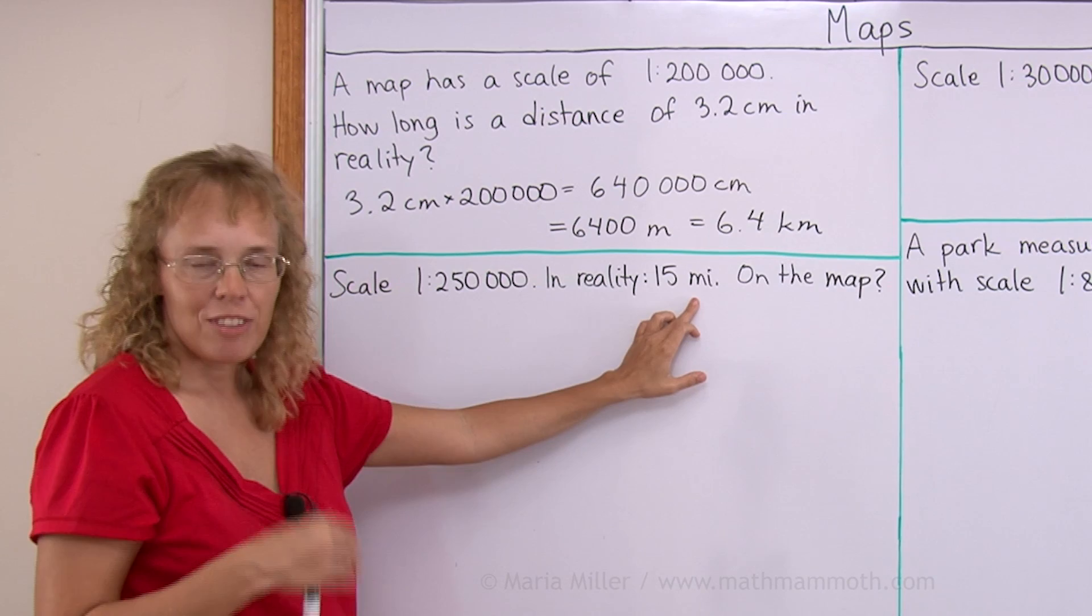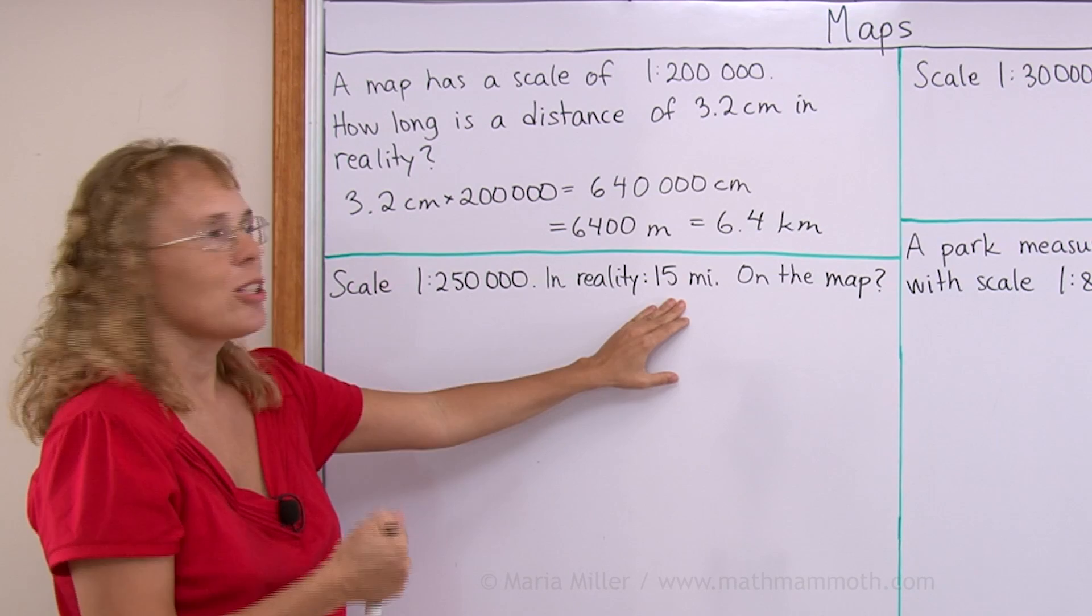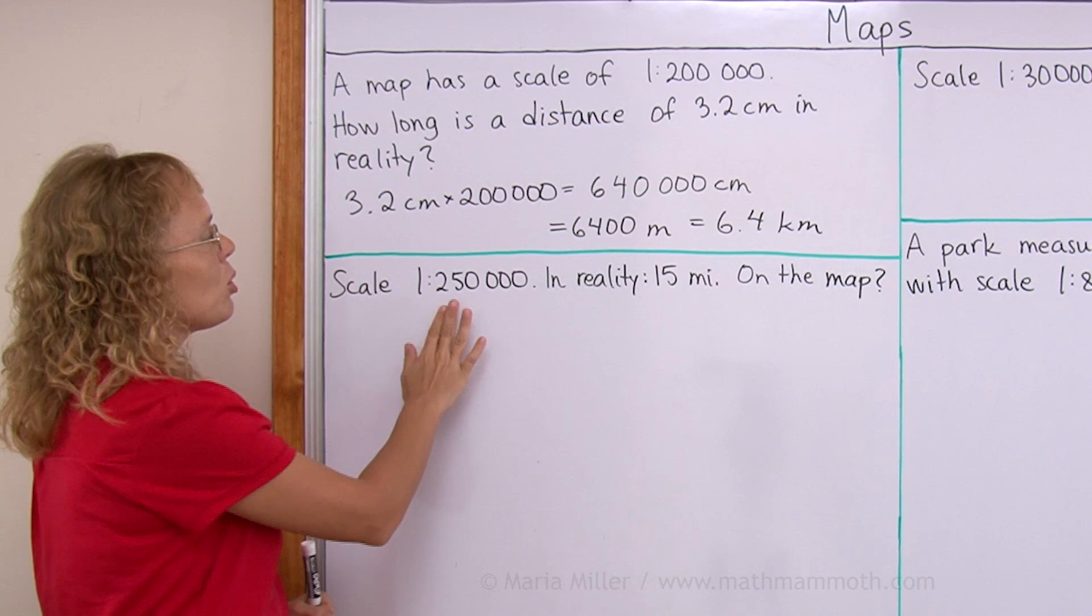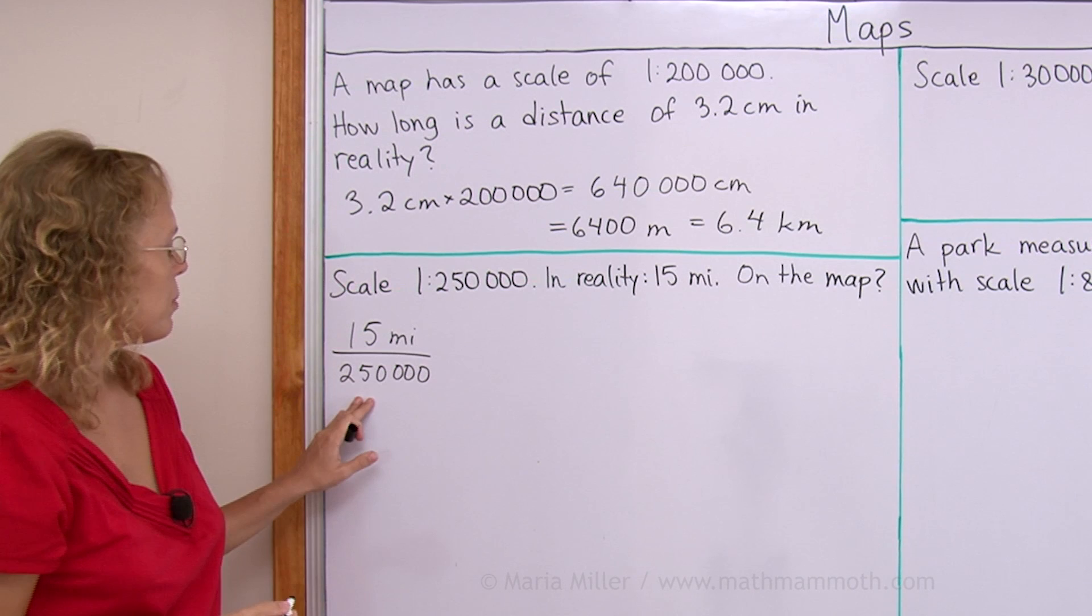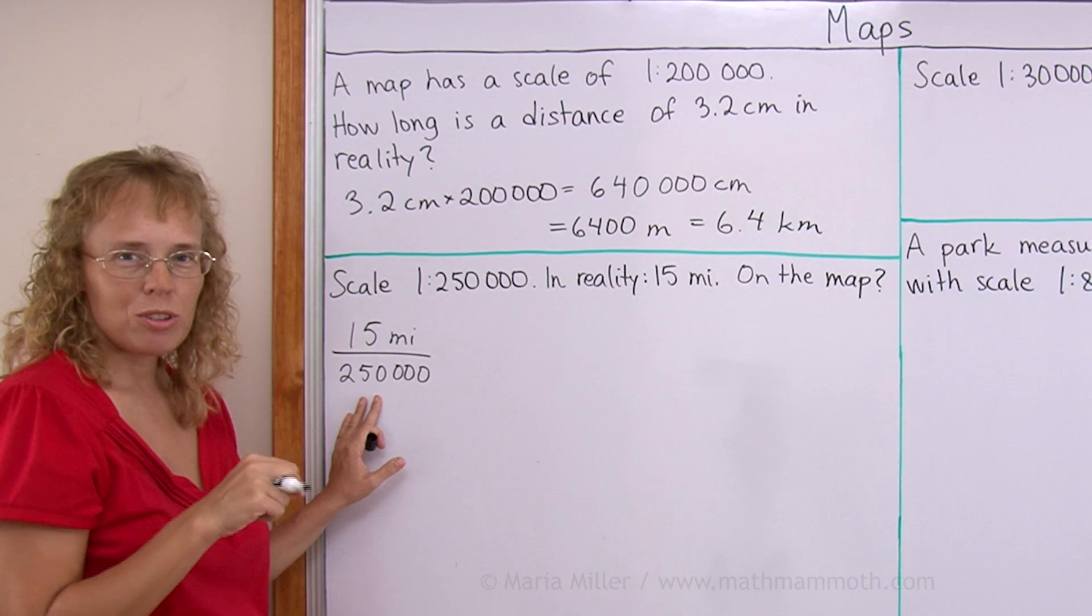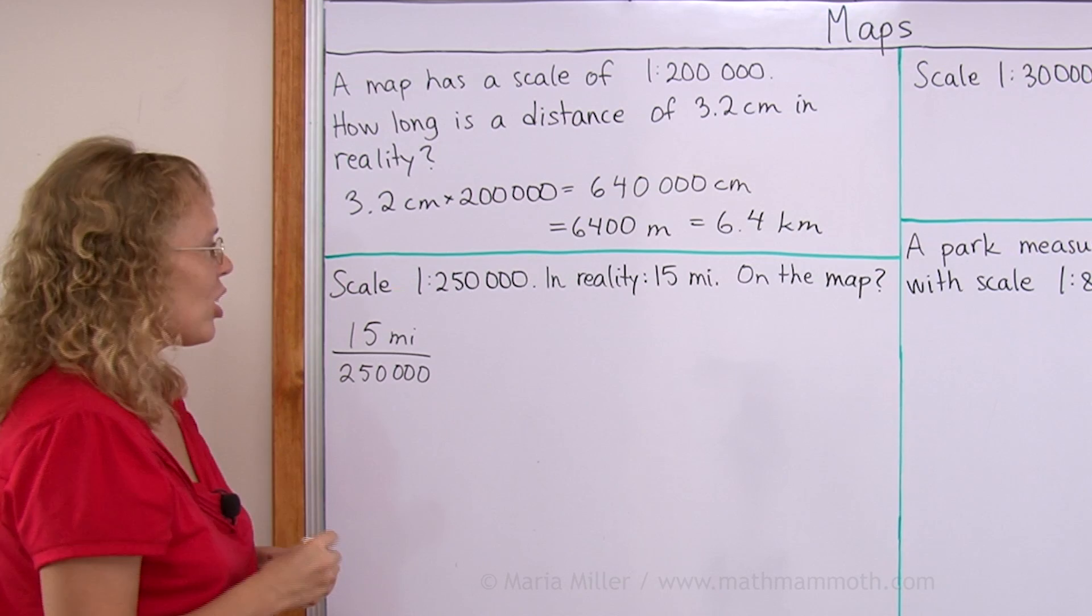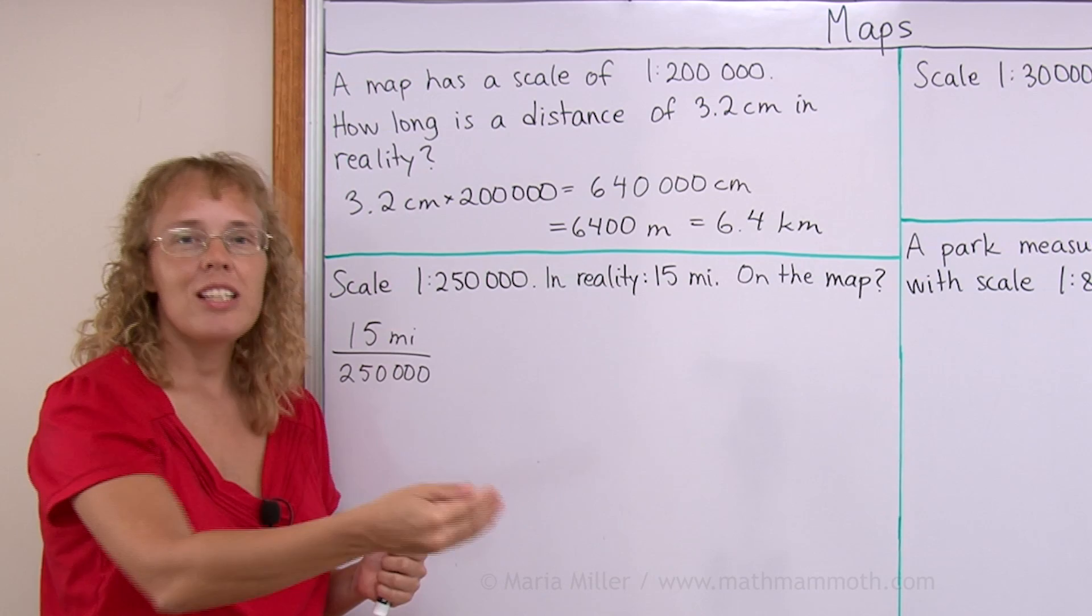We wouldn't want to multiply this by 250,000, we would get a huge amount of miles. So we divide 15 miles by 250,000. And I'll show you two ways to do this conversion. Now you can put this into a calculator and you will get some really small decimal number. So instead I could first change those 15 miles into so many feet and then into so many inches, and then only lastly divide by 250,000.